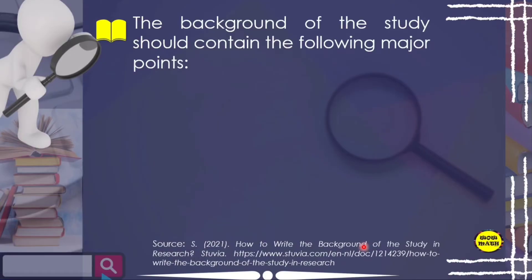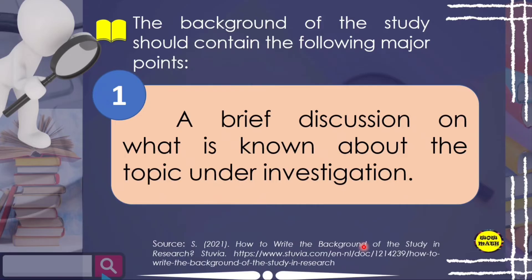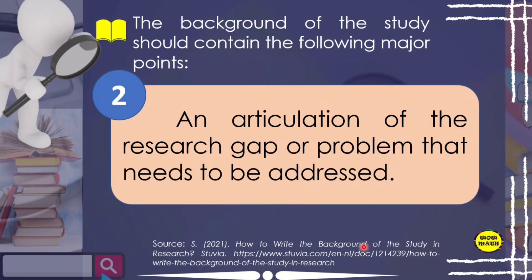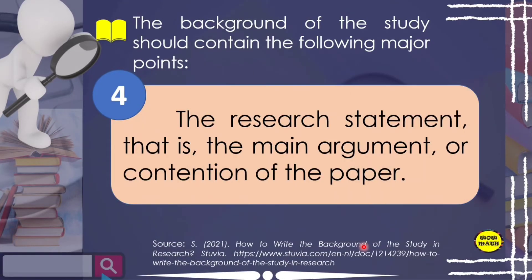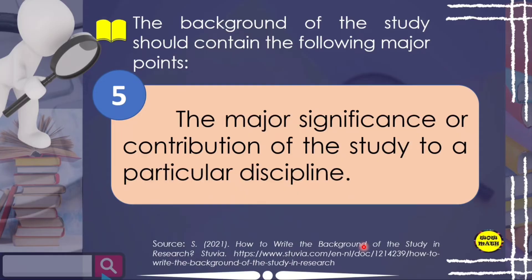The background of the study should contain the following major points: number one, a brief discussion on what is known about the topic under investigation; number two, an articulation of the research gap or problem that needs to be addressed; number three, what the researcher would like to do or aims to achieve — the research goal; number four, the research statement or main argument of the paper; number five, the major significance or contribution of the study to a particular discipline — pwedeng ilagay dito kung paano makatulong ito sa community yung research na iko-conduct mo.